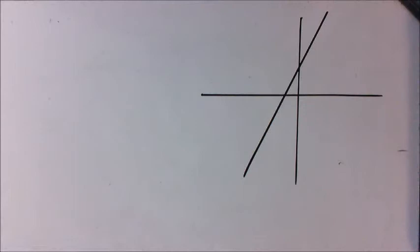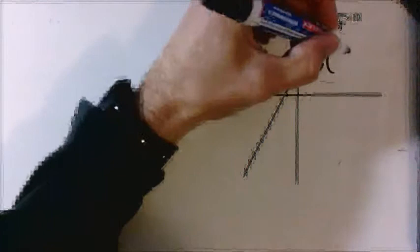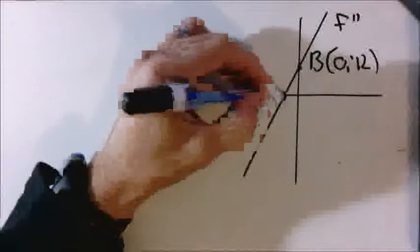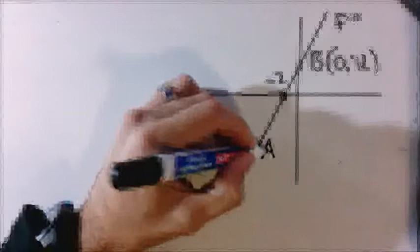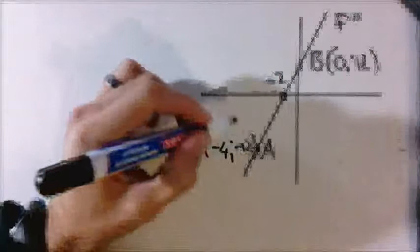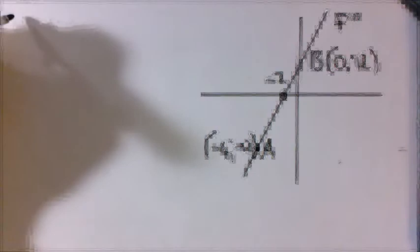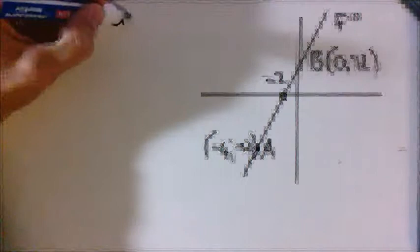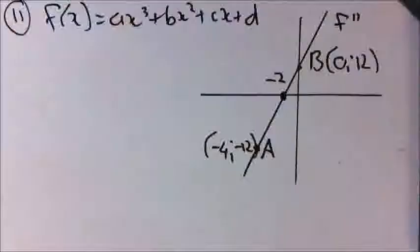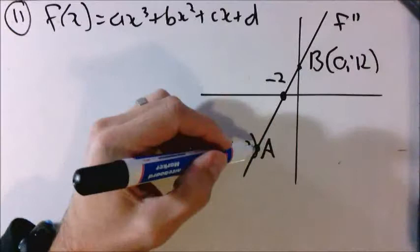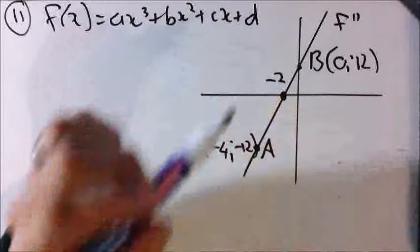So they gave us a graph. They told us it is the second derivative, and they gave us the coordinate B which is (0, 12), and it intercepts at negative 2. They gave us the A coordinate which was (-4, -12). The diagram shows the graph of the second derivative of a function which looks like Ax³ + Bx² + Cx + D. They tell us that A and B are the points where the first derivative is equal to 0.